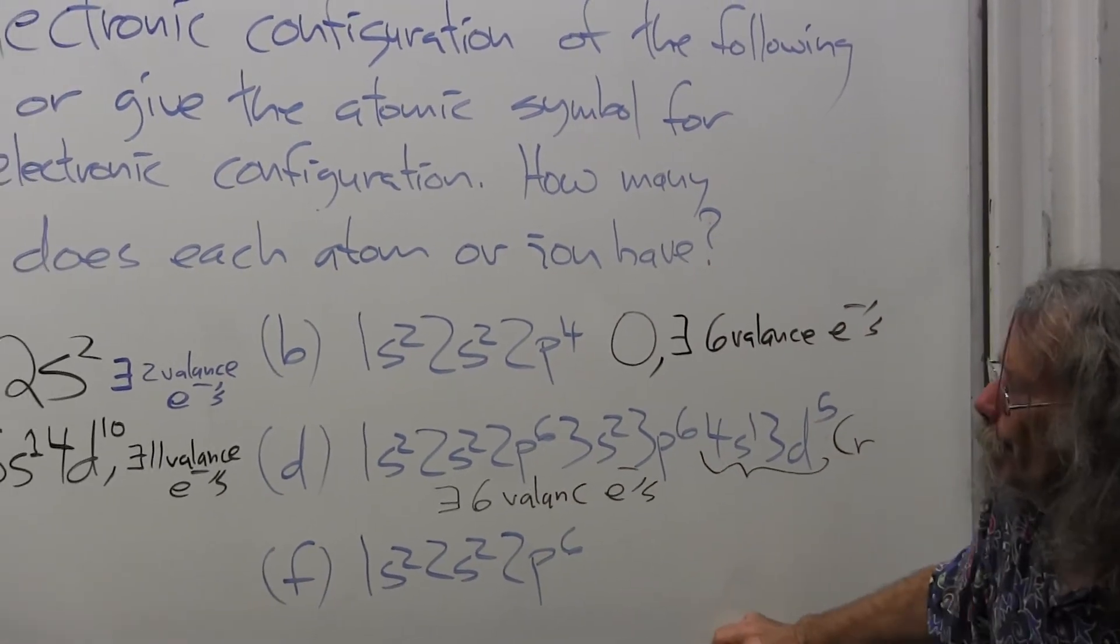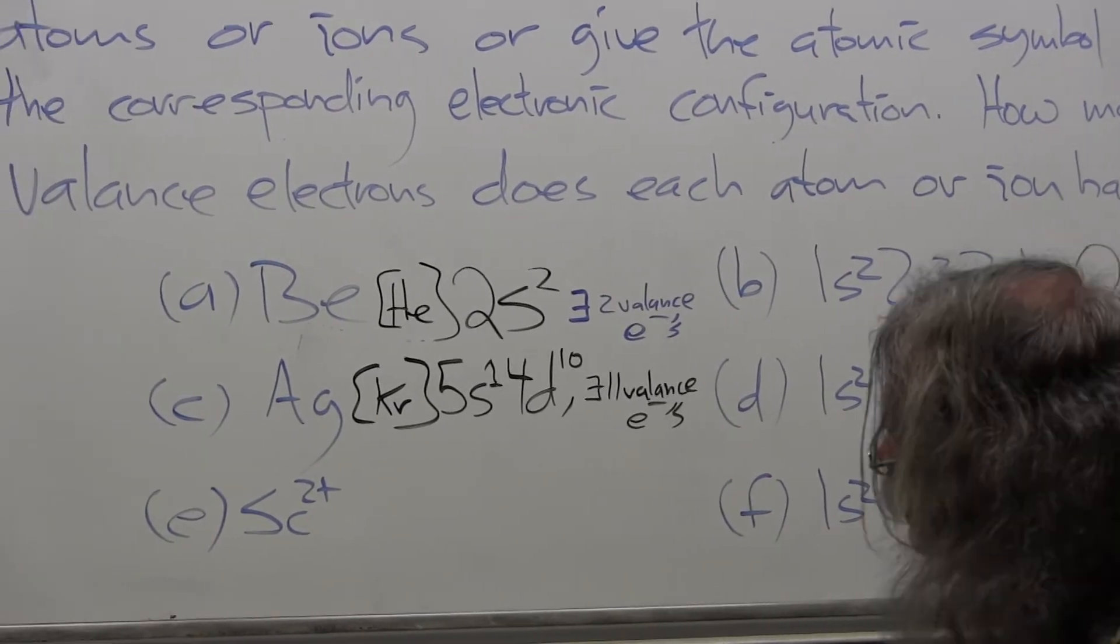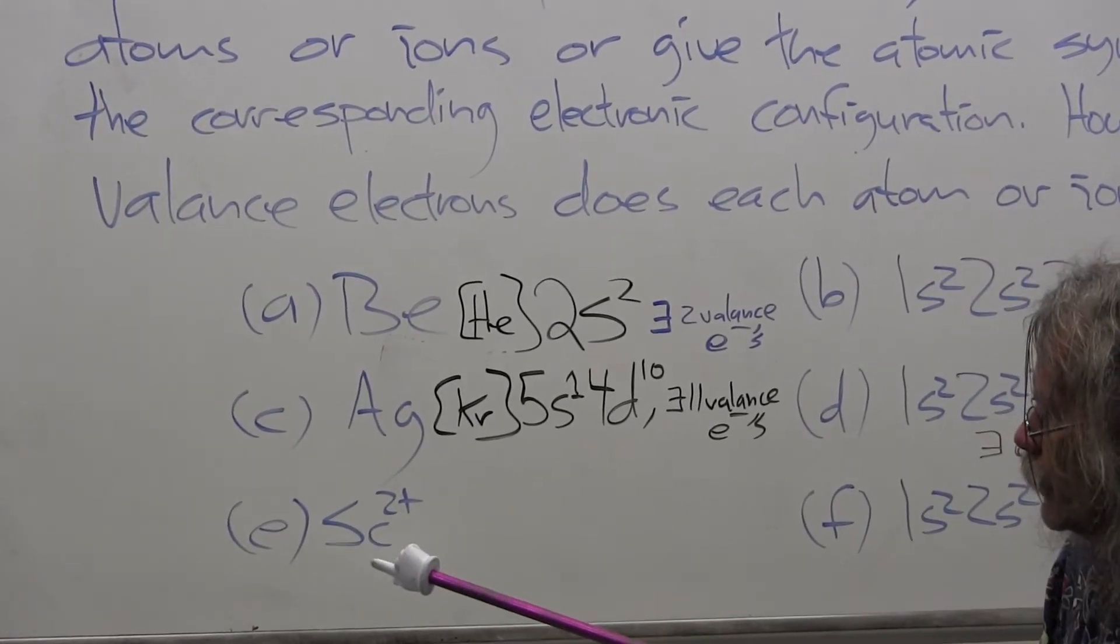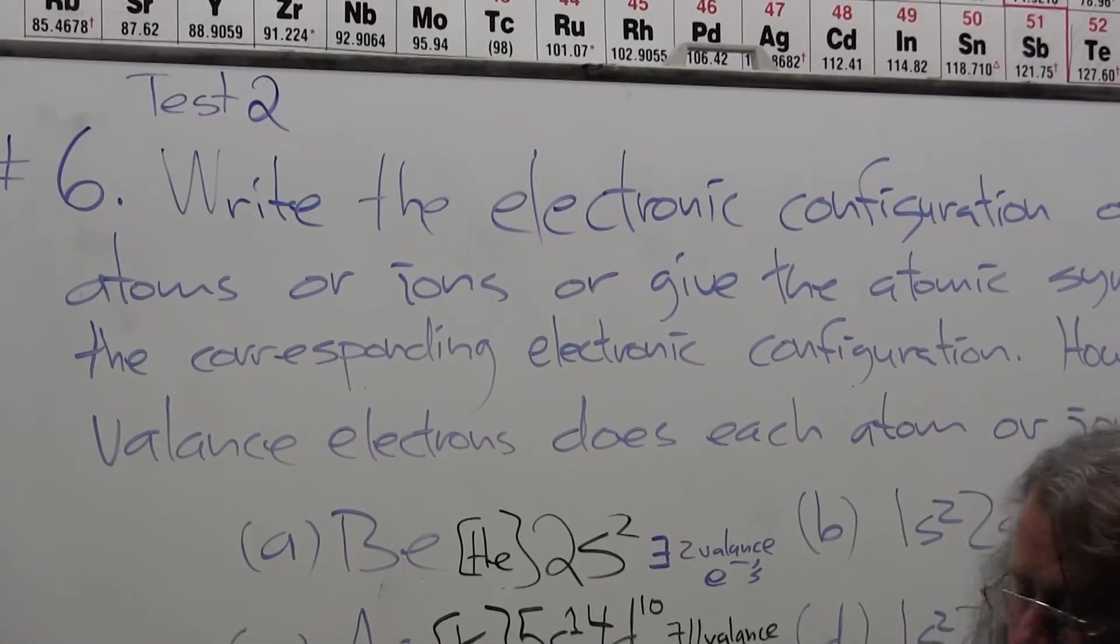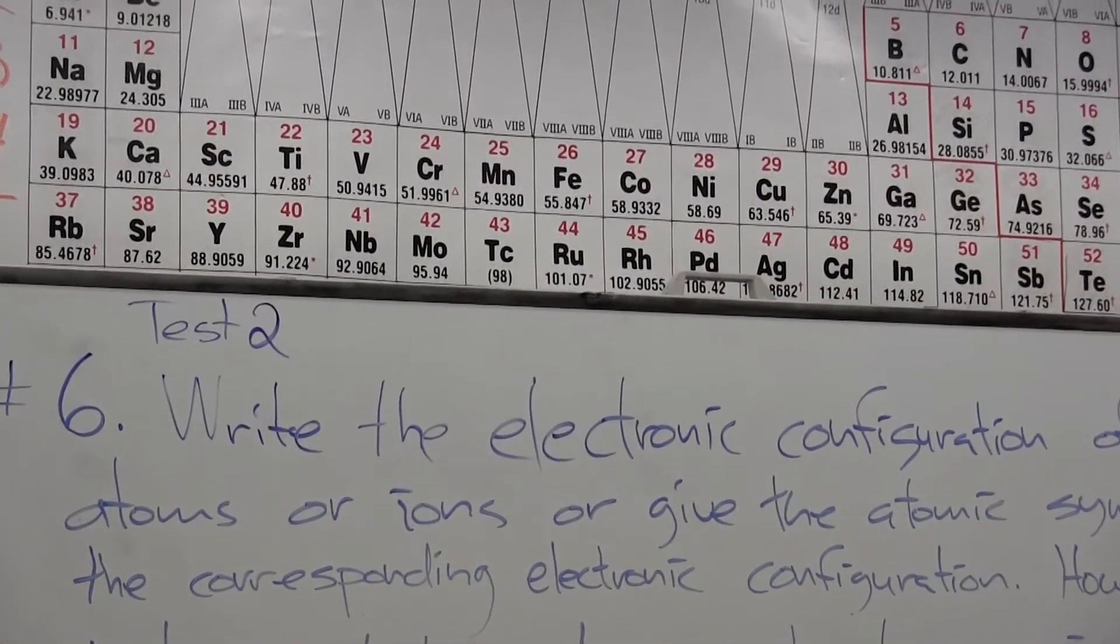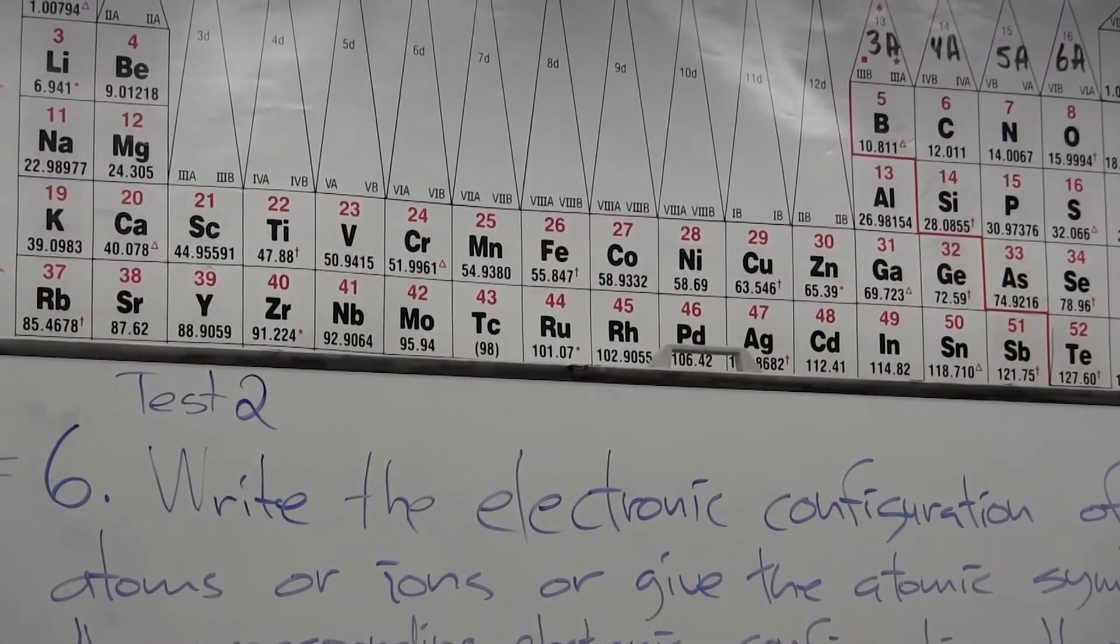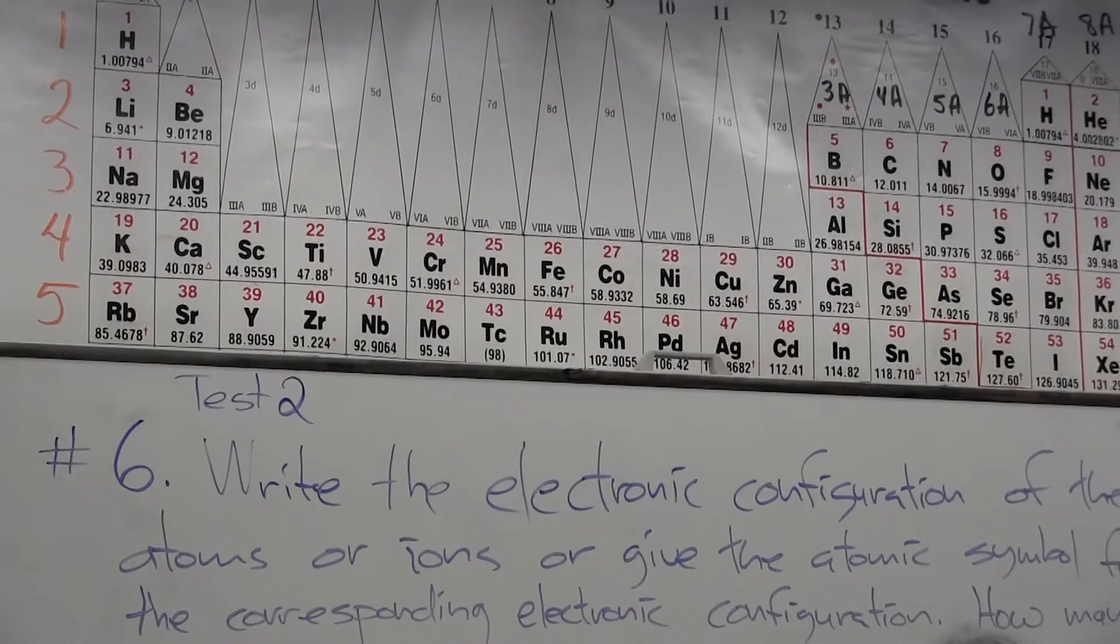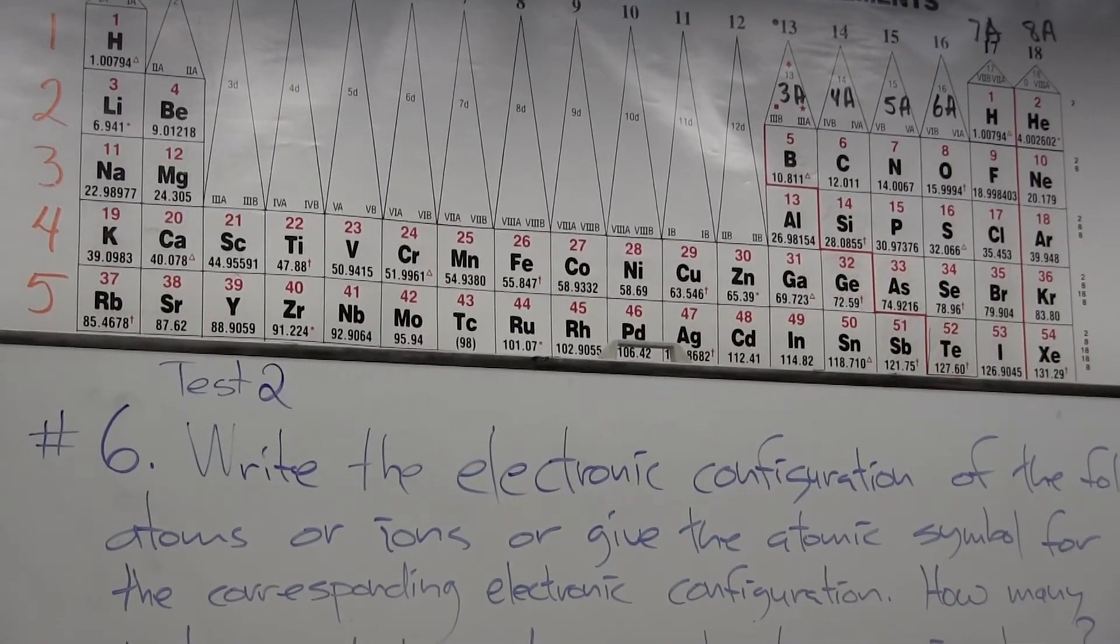Okay, now scandium. Part E is scandium 2+. Scandium is again in the fourth row, and now I'm going to take advantage of another somewhat anomalous thing that occurs, which is not at all anomalous when you understand it.